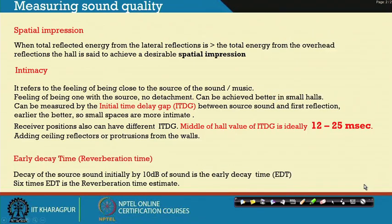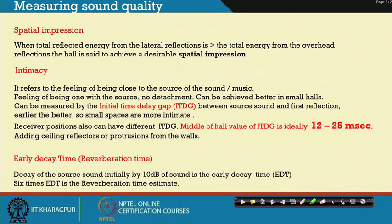Early decay time also indicates a portion of the reverberation time. Early decay time is the first 10 decibels of sound decay. The later decay takes around 5 times that — so the total is 6 times the early decay time — which actually forms the reverberation time. This should be measured: the decay of the source sound initially by 10 dB is called the early decay time, and it should be optimum so that the reverberation time, which is 6 times that, is actually achieved.